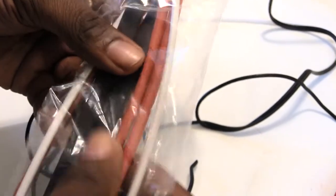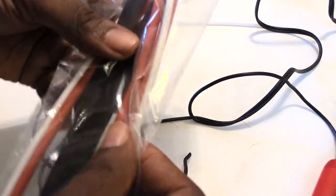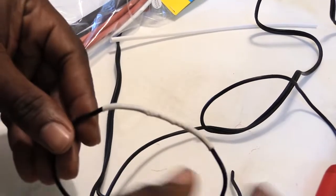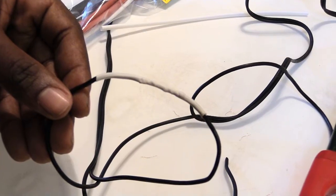Once again folks, this is the proper way that you would connect electrical wiring by using the western union twist the way I showed you.